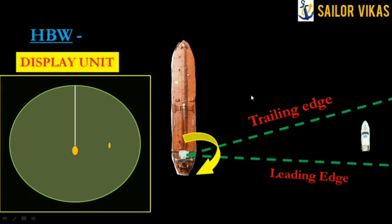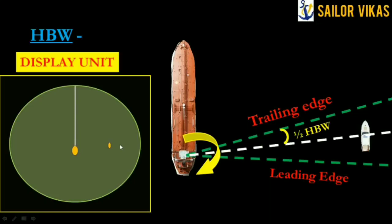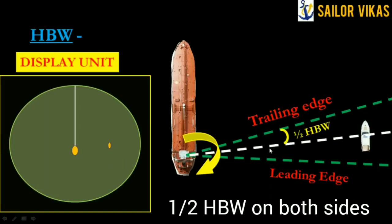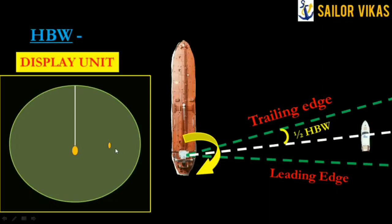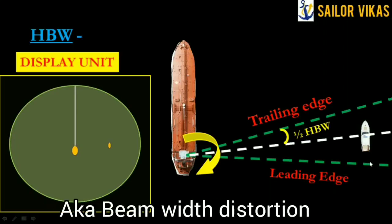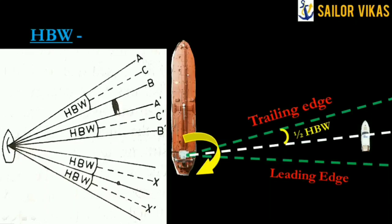Horizontal beam width is the angle at the scanner between the leading edge and the trailing edge. The target appears flattened and brightened, and this enlargement equals half the angle of horizontal beam width on the front side and half on the behind side. The white line shown divides the full horizontal beam width angle in half, and the paint increases by half beam width ahead and half beam width behind.